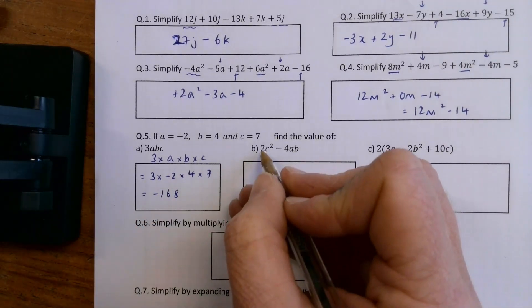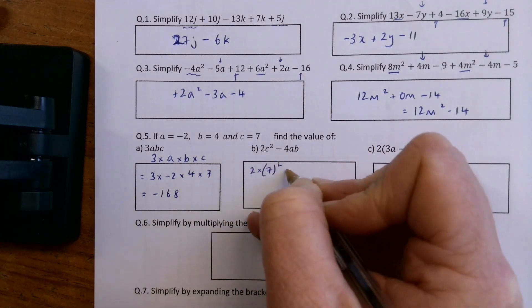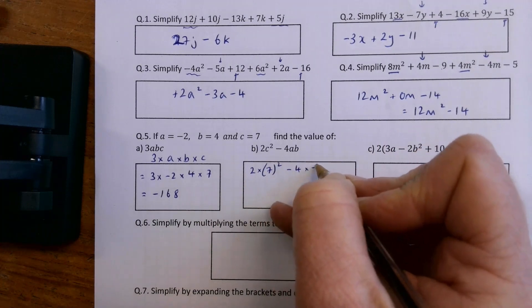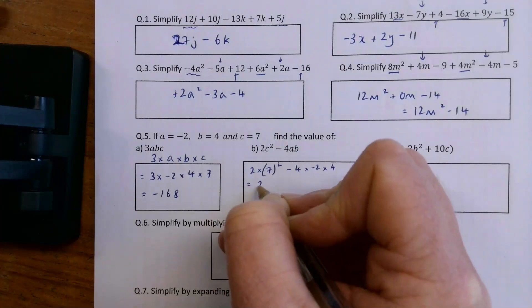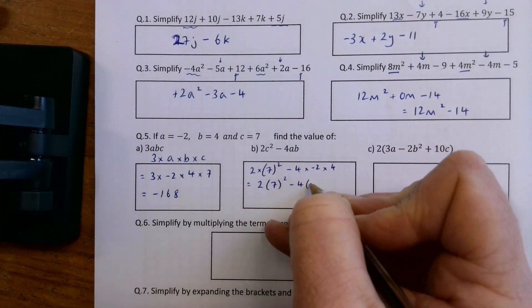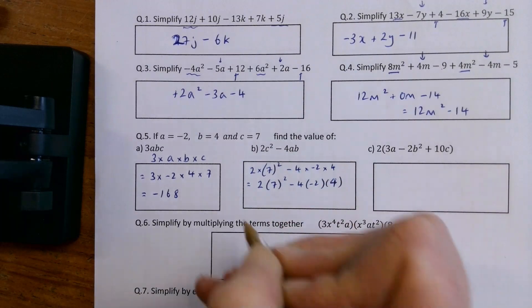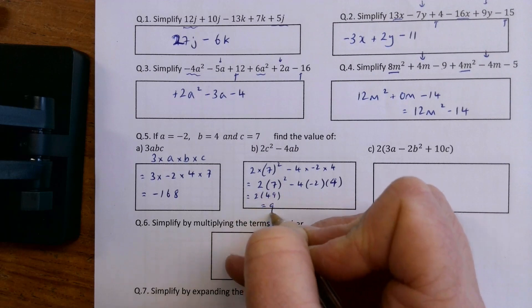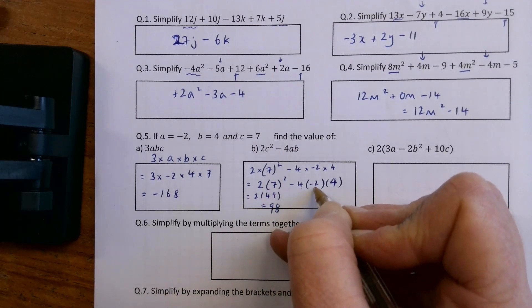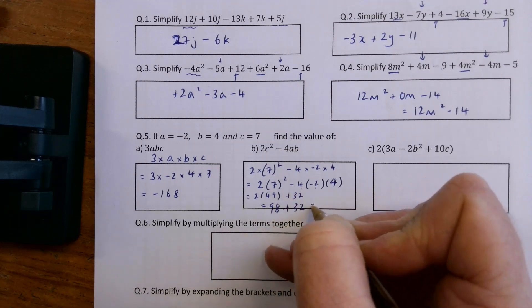2C squared is going to be 2 multiplied by C squared, so 7 squared minus 4 multiplied by minus 2 by 4. Now actually, I normally would write that like this, because I think all the X's get a bit confusing. So 2 by 7 squared is 2 by 49, which is 98. Minus 4 by minus 2 is plus 8 by 4 is plus 32. So 98 plus 32 is 130.